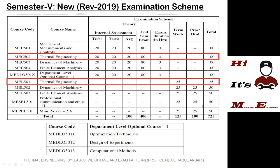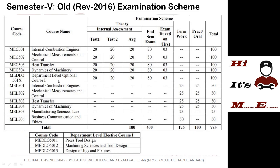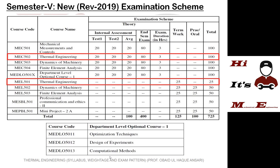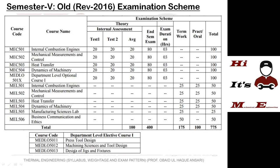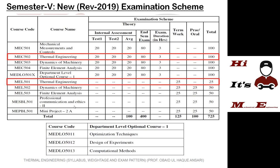In the old scheme you had department level optional courses: press tool design, machining science and tool design, and design of jigs and fixtures. In the new scheme there are also 3 department level optional courses but different ones: optimization techniques, design of experiments, and computational methods. In the old scheme these optional courses had a common lab — manufacturing sciences lab — for term work only, but there is no such lab in the new scheme.